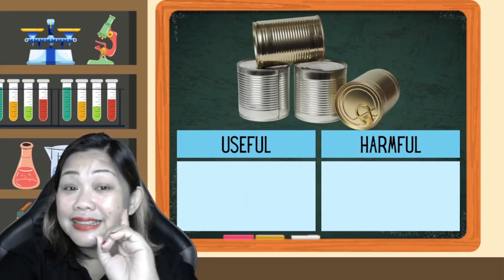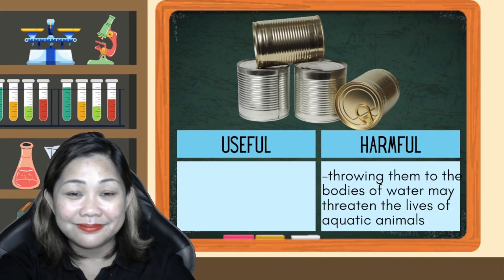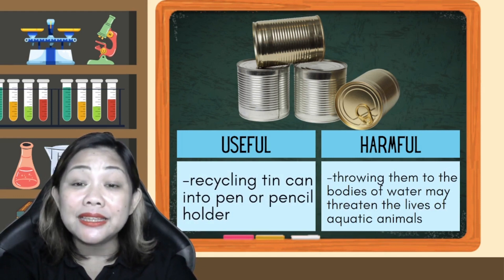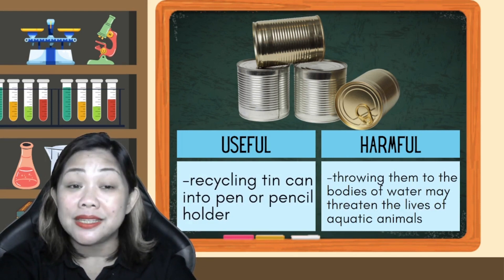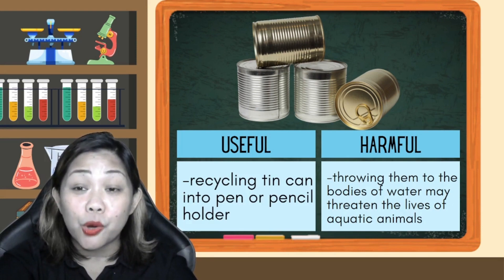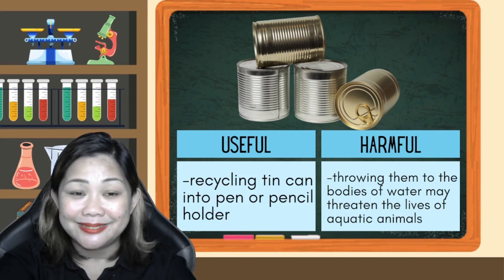For tin cans: recycling a tin can into a pen or pencil holder is useful, while throwing them into bodies of water — which may threaten the lives of aquatic animals — is harmful.